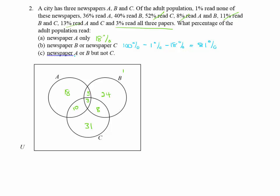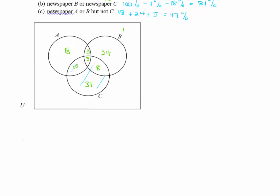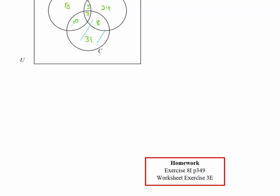For newspaper A or B but not C: we don't want anything in C, so we take the A-only region (18), the B-only region (24), and the A-and-B intersection (5), plus the value 8 — giving 47%. Have a go at the exercises and the worksheet, and if you have any questions, you know where to find me.